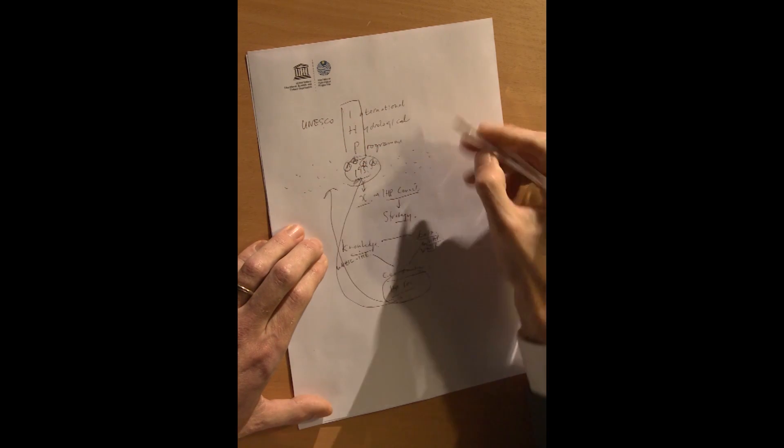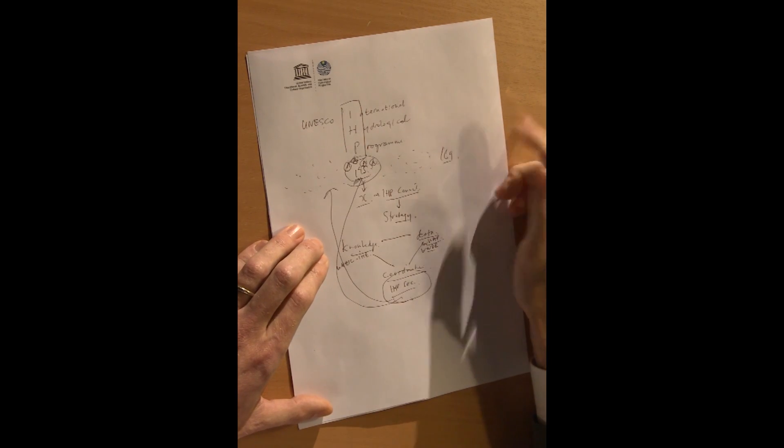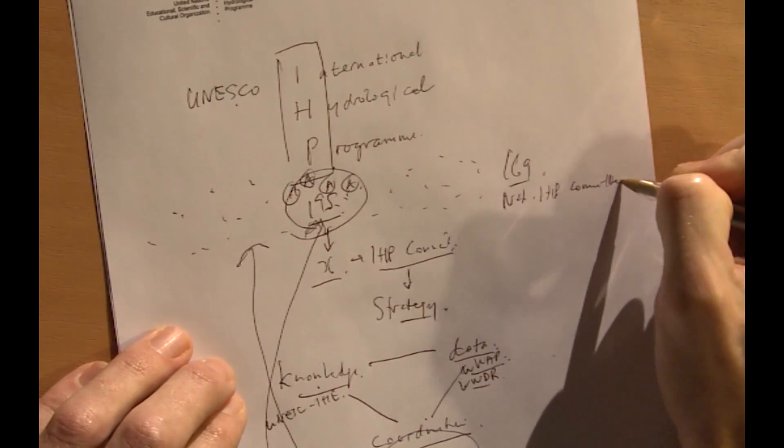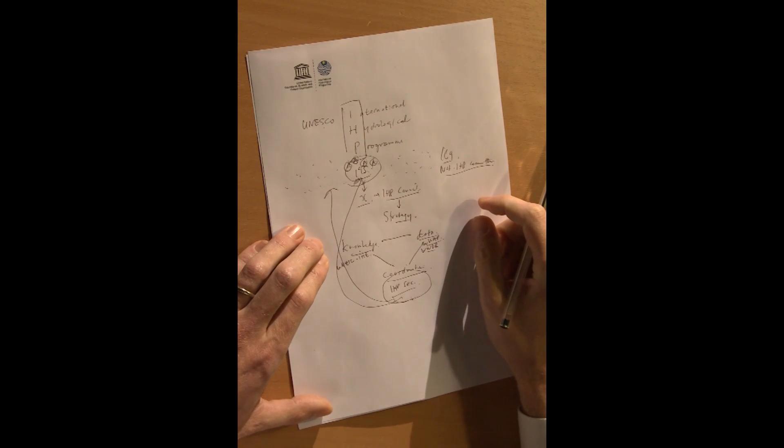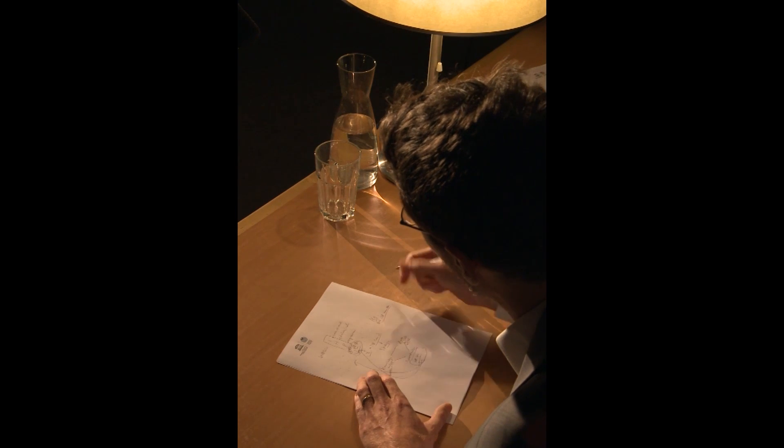As a matter of fact, 169 of these countries have their own national IHP committee. Now, what is a national IHP committee? It's a committee composed of water experts, like scientists, directors of research institutions, and so on.